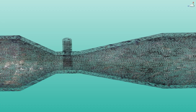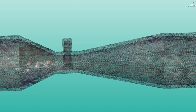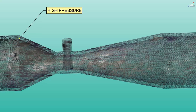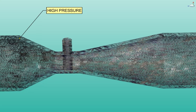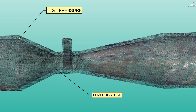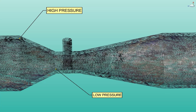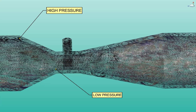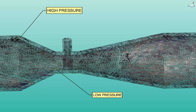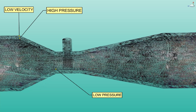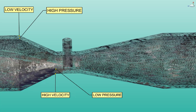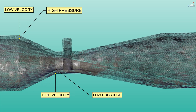Look at this working Venturimeter with liquid flowing through it. This is the high-pressure region at the inlet — high pressure means low velocity head, so velocity is low. At the throat this is the low-pressure zone — low pressure means high velocity head, so velocity is high.